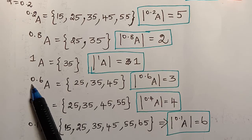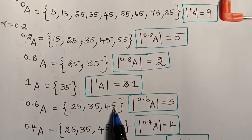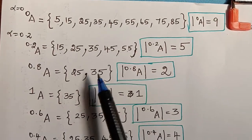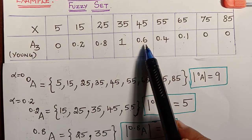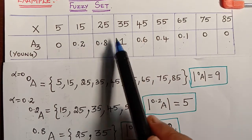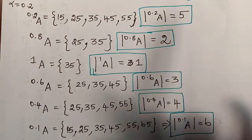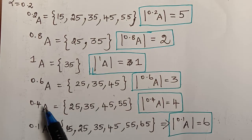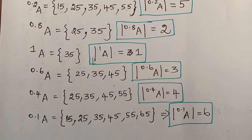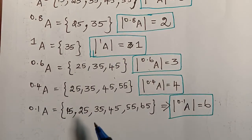For alpha equal to 0.6, the elements with membership grade greater than or equal to 0.6 are 25, 35, and 45, giving a modulus of 3. We have similarly evaluated for alpha equal to 0.4 and 0.1. For all values of alpha we have now evaluated these sets, and we are ready to write the fuzzy cardinality.